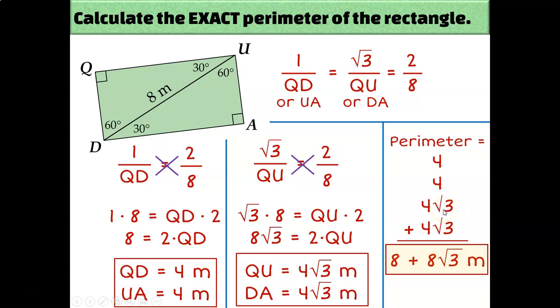You can think about the root 3 almost like a variable, that you don't change the root 3 at all. It's still root 3 in the answer. You don't have root 6 or anything like that. It's just saying I've got 4 square roots of 3, and I add 4 more square roots of 3 to that, so I would have a total of 8 square roots of 3. So the total perimeter of this rectangle would be 8 plus 8 times the square root of 3 meters.